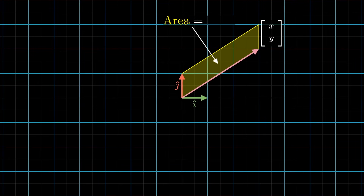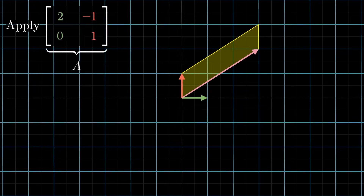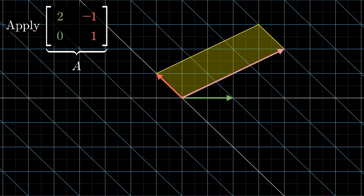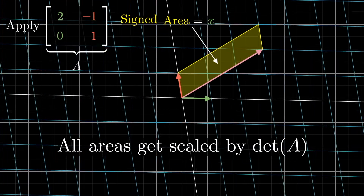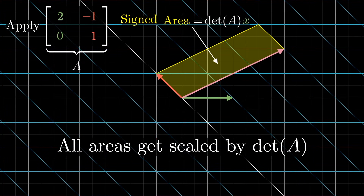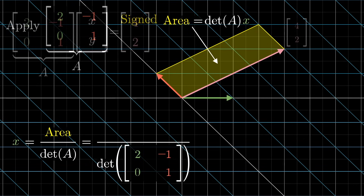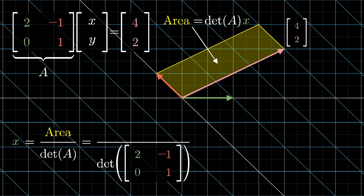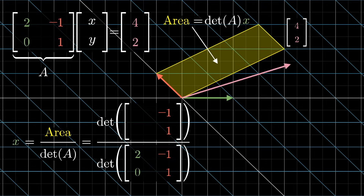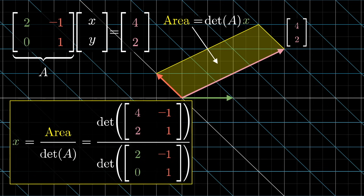Likewise, the same idea can give us the x-coordinate. Look at the parallelogram we defined earlier which encodes the x-coordinate of the mystery input vector, spanned by that vector and j-hat. The transformed version of this is spanned by the output vector and the second column of the matrix, and its area will have been multiplied by the determinant of that matrix. So to solve for x, you can take this new area divided by the determinant of the full transformation. And similar to what we did before, you can compute the area of that output parallelogram by creating a new matrix whose first column is the output vector and whose second column is the same as the original matrix.